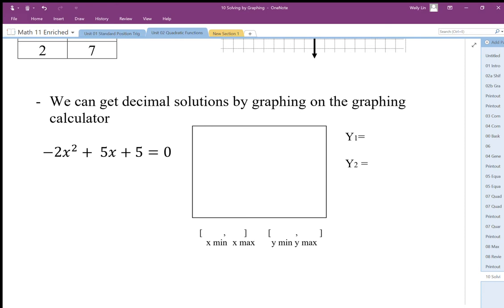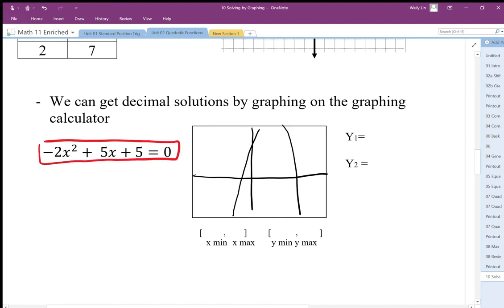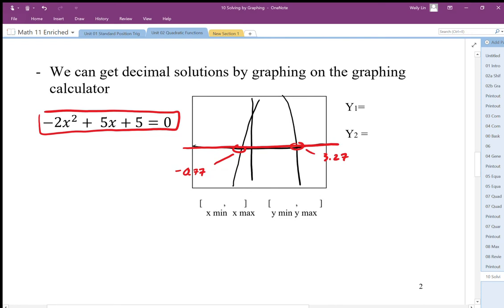I graph this using a standard window, so I get a graph that kind of looks like this. Usually I draw in the vertex because that is the most important part of the graph, but really when we're solving equations we're looking at where it crosses the x-axis. When we find those, one of the solutions here is at approximately 3.227, and we have another solution over here at negative 0.77. So we can solve these by graphing and find a much more accurate decimal value.